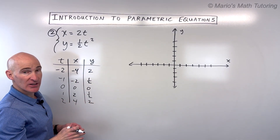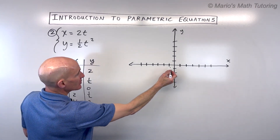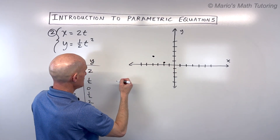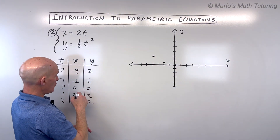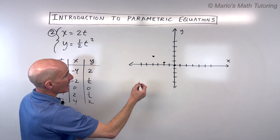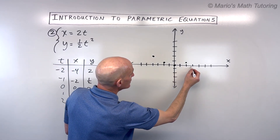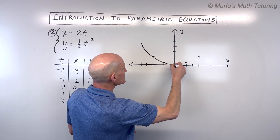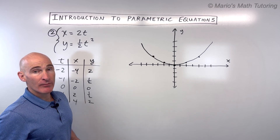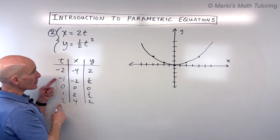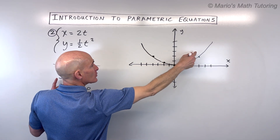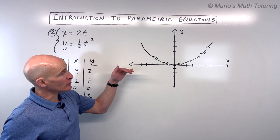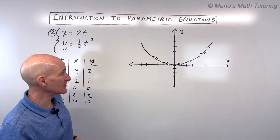Now we're going to graph these xy coordinates in the xy plane. We've got negative four, two; negative two, one half; zero, zero at the origin; two, one half; and four, two. Plotting these, it looks like we have a parabola. Notice that as t is getting bigger, we're heading this direction, so we put arrows to indicate the orientation or direction that this particle is traveling with increasing values of time.